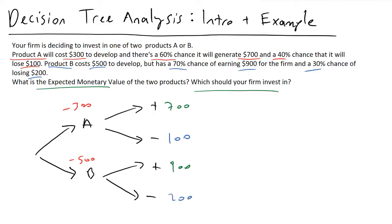Now the other thing that we're going to do is we're going to fill in the actual likelihoods of each of these scenarios happening. So for product A, our risk analysis told us that there was a 60% chance that it would generate us $700. So I'm going to write 0.60 right here. And for the bad scenario, that's going to be that 40% chance. So we're going to put a 0.40 right there.